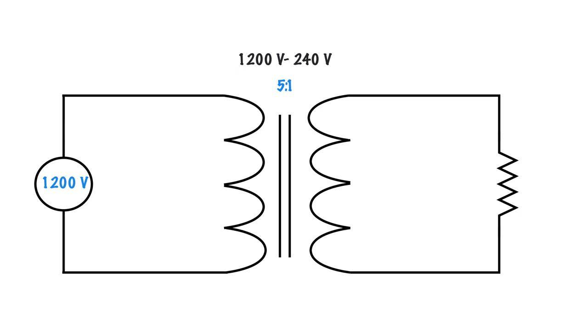So we have 1200 volts at the source with a 5 to 1 ratio. 1200 divided by 5 will give me the secondary voltage here, which in this case is 240 volts.